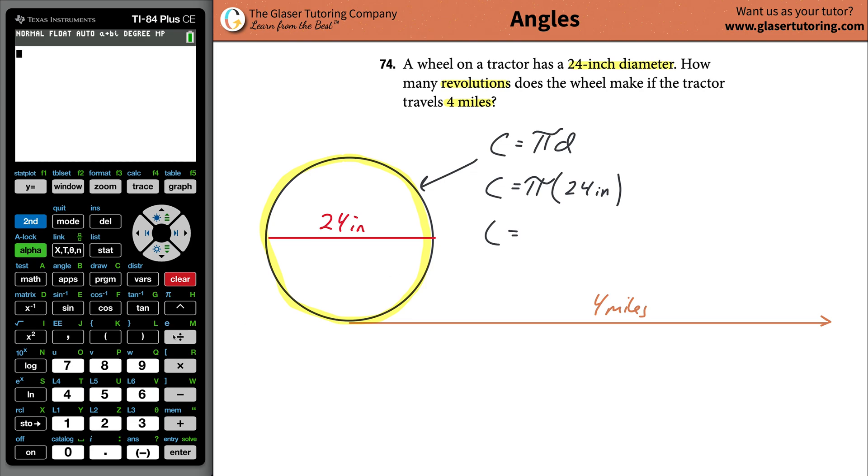When we calculate this, we're going to get our answer in inches. Go to your calculator, hit second π, and then multiply that by 24. We get 75.4 inches, roughly. That's now the length of the circumference.